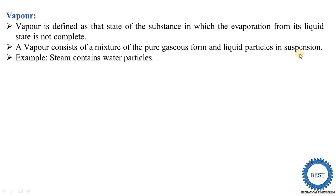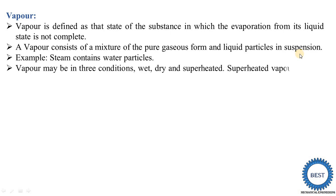So what are the examples of vapor? An example of vapor is steam, which contains water particles — meaning inside the steam, some water particles are there. It is called vapor. Vapor may be in three conditions. There are three types of vapor possible: first one is the wet vapor, second one is the dry vapor, and third one is the superheated vapor.